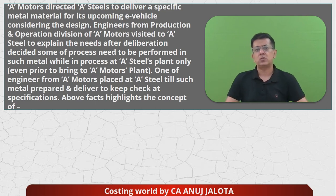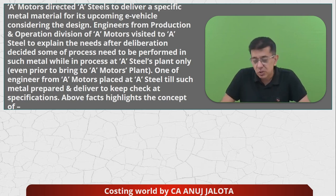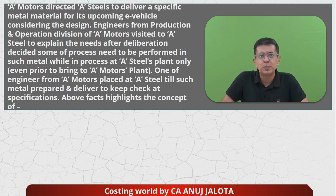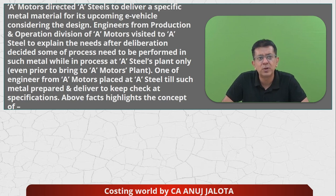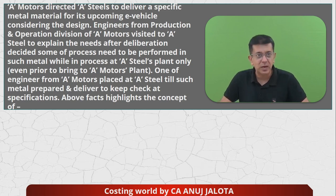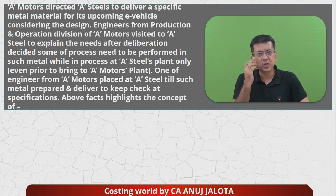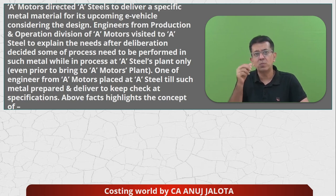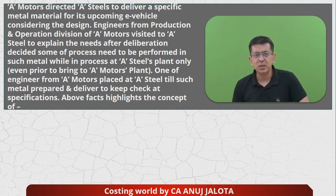A Motors directed A Steels to deliver a specific metal material for its upcoming e-vehicle considering the design. Engineers from the Production and Operation Division of A Motors visited A Steel to explain the needs. After deliberation, they decided some processes needed to be performed on the metal while still in the A Steel plant, even prior to bringing it to the A Motors plant. One of the engineers from A Motors was placed at A Steel until the metal is prepared and delivered, to keep a check on specifications.